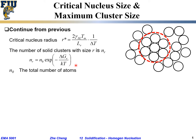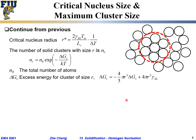This relationship tells us: if we have N₀ total atoms at temperature T, which is below the melting temperature, how many clusters arranged like a solid exist within the liquid? The number of such clusters with size r is given by this expression. Here, the ΔGr term is the excess energy for the local cluster with size r, which comes from the volume term and the area term, and depends on the radius.